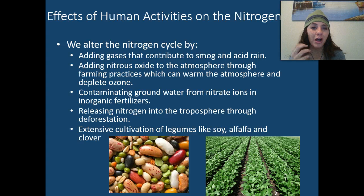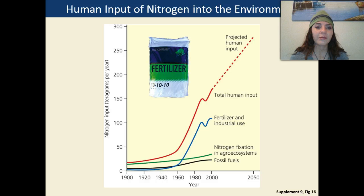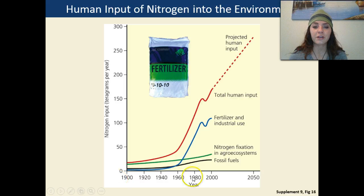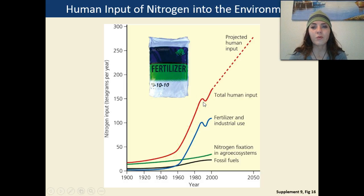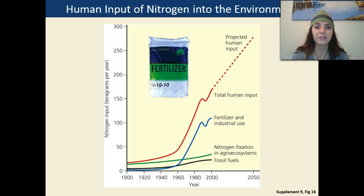Remember, legumes have those nodules on them. Looking at the human input of nitrogen into the environment — measured in tetragrams per year over time — we can see a huge exponential growth in total human input. With our industrial revolution and agricultural revolution, we started putting large amounts of nitrogen into the atmosphere.